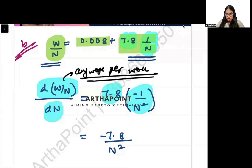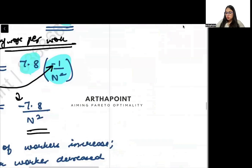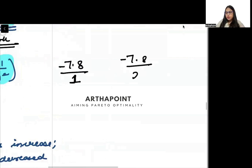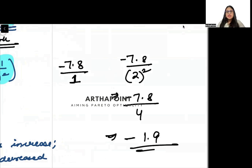W by N is average wage per worker, per capita wage rate, wage per worker. We are asking how wage per worker changes, how per capita wage rate changes as the worker changes, and I am getting a negative sign. I am also getting N in the denominator. As N's value is 1, you will have minus 7.8 by 1. As N's value is 2, you have minus 7.8 by 2 squared, which will be minus 7.8 by 4, which will be minus 1.9 something.